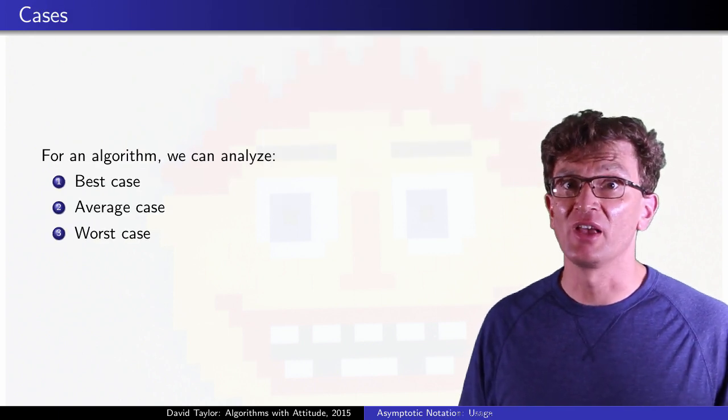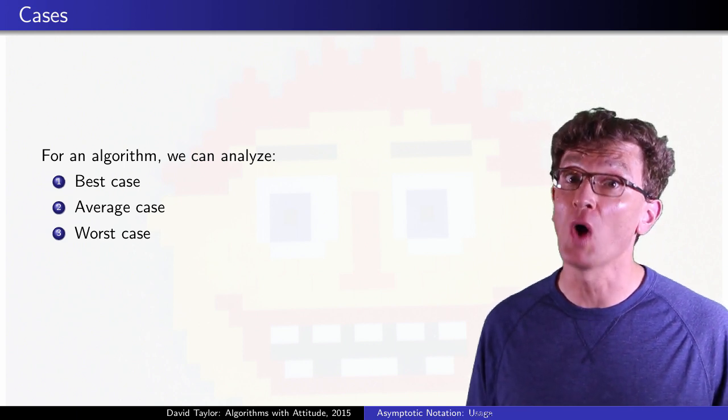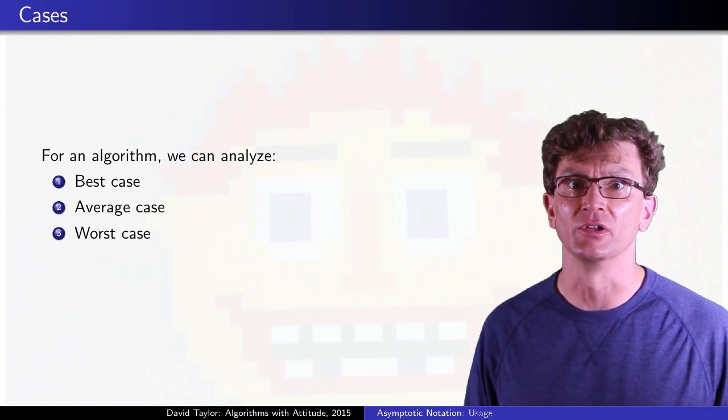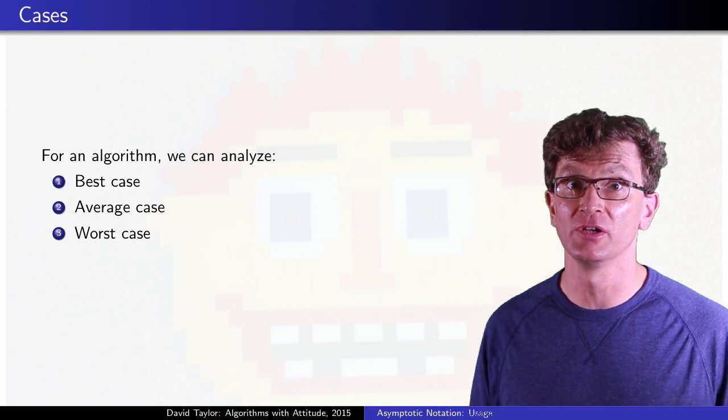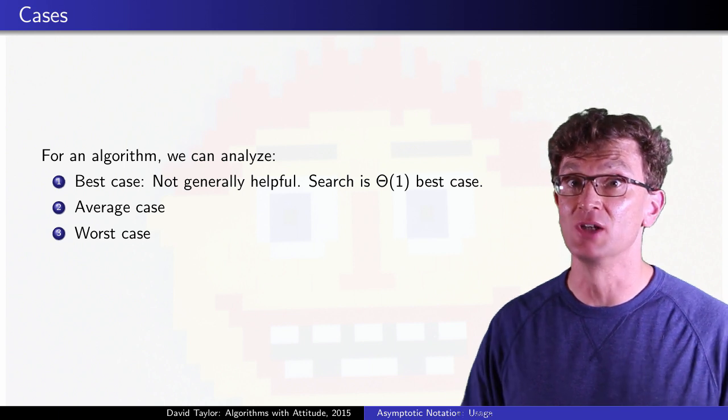So we generally talk about best case, average, and worst case analysis. Now, best case is often times too optimistic to be helpful. For instance, for a search in an unordered list, best case is constant time. The first element you look at is what you need, done.